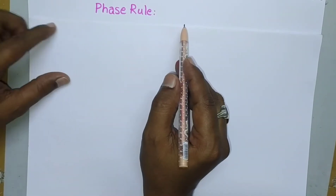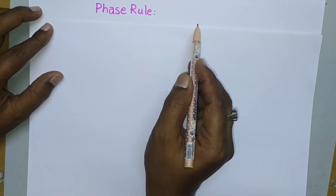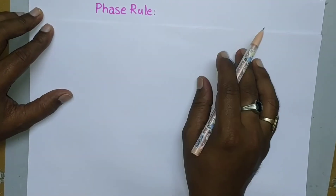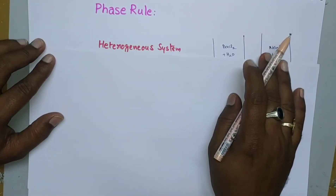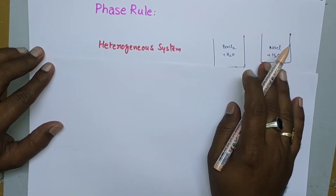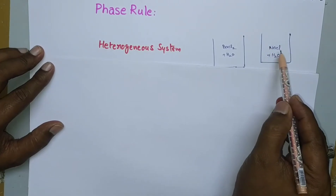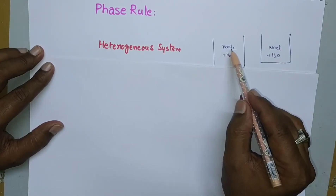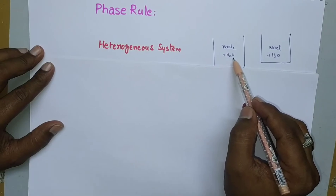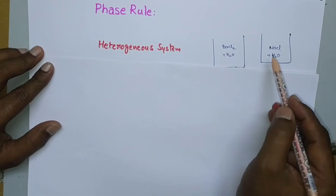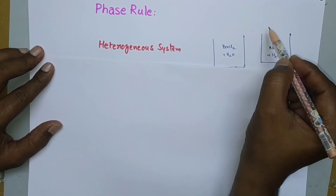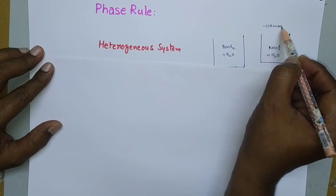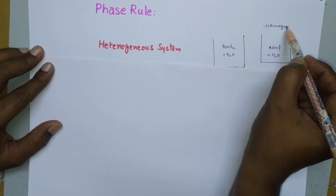This phase rule is applicable only for heterogeneous systems. What is meant by heterogeneous system? Let us consider sodium chloride dissolved in water — it forms a homogeneous system.